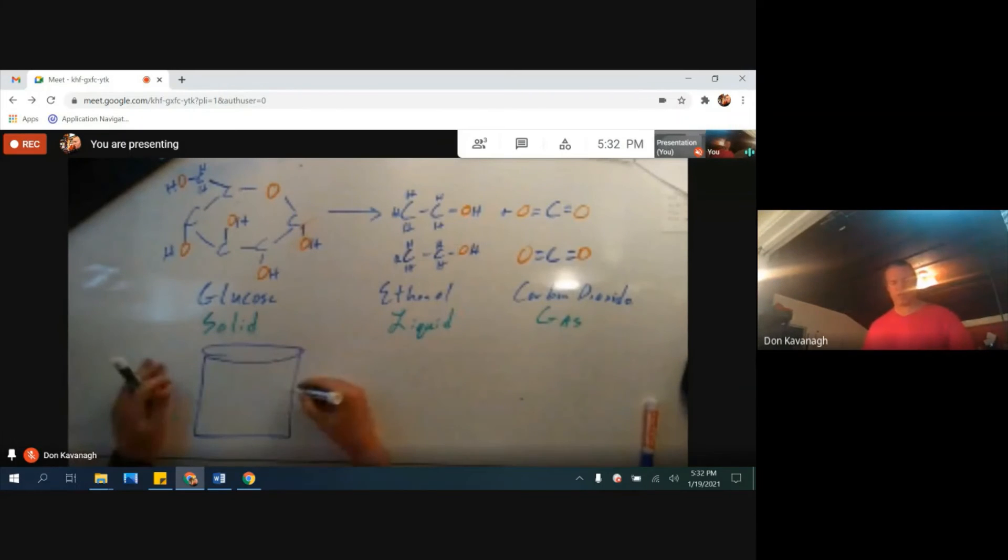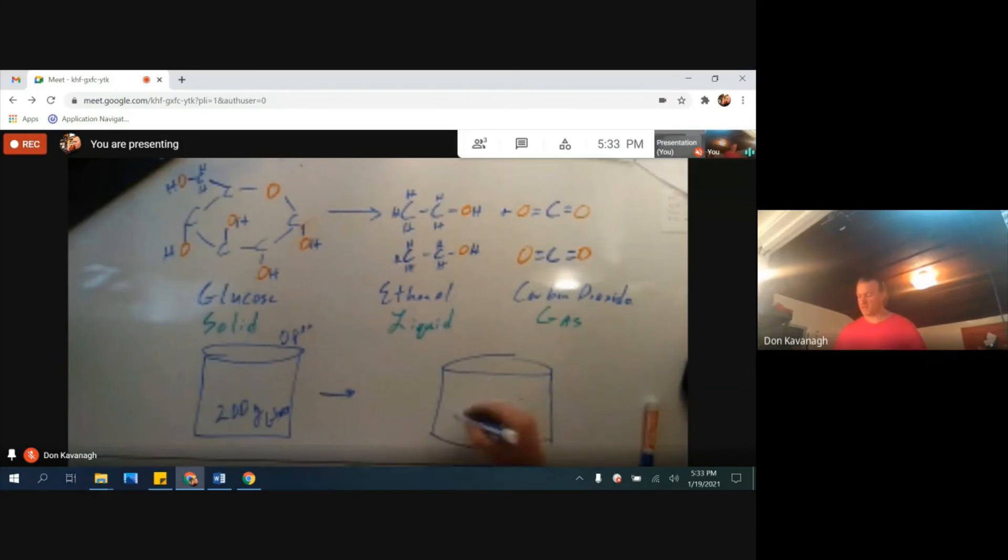Consider, if we run the reaction in a container with 200 grams of glucose, and I want to note that this is an open container. Now, there's going to be a mass of ethanol, and there's going to be a mass of CO2 produced. But because this is an open container, and because what liquids do, and because what gases do, this container is not going to weigh 200 grams. That carbon dioxide gas is going to do what gases do and float away while the liquid ethanol stays in the container.